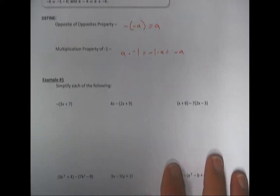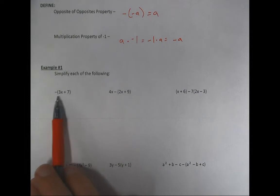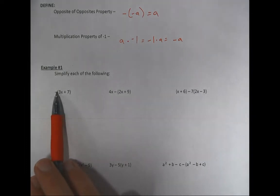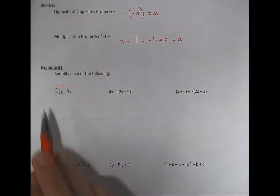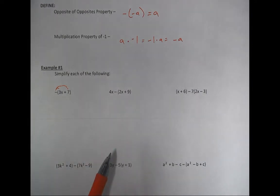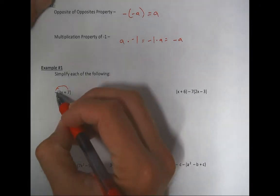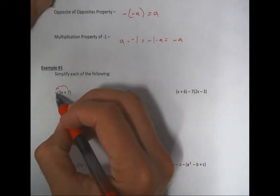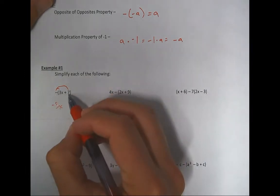We're going to look at how this follows the distributive property and how it plays into the rules we've been following in chapter two to simplify. Sometimes you'll see an expression with a negative on the outside of parentheses — treat that as a negative one being distributed. For example, negative one times 3x is negative 3x, and negative one times 7 is negative 7.